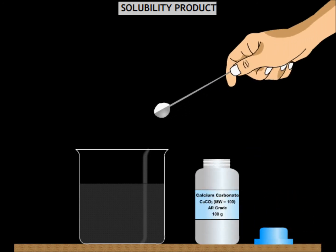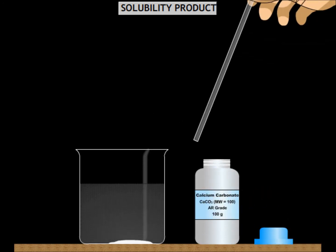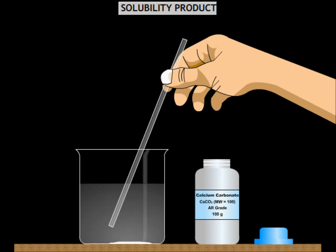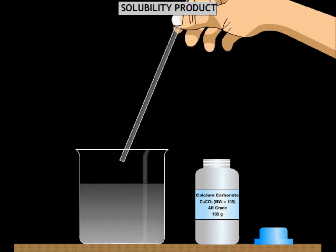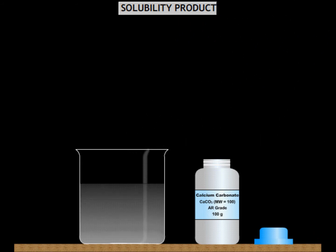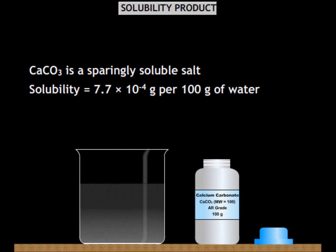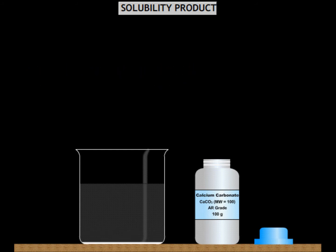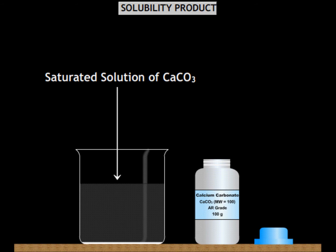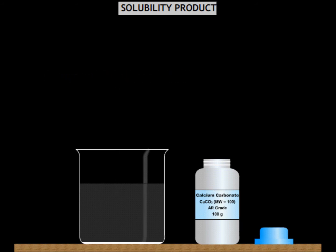Suppose we dissolve calcium carbonate in a beaker containing distilled water at room temperature. To the naked eye, one cannot perceive that any salt has dissolved at all. This is because calcium carbonate is a sparingly soluble salt having solubility as low as 7.7 × 10⁻⁴ grams per 100 grams of water. After stirring for a while, we get a saturated solution of calcium carbonate which contains calcium and carbonate ions in the aqueous phase.